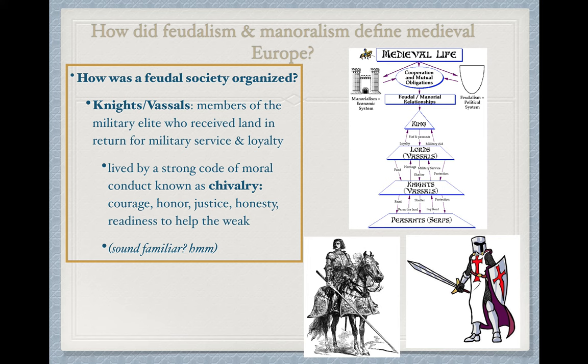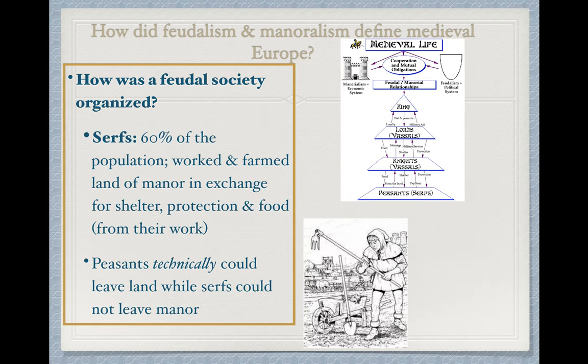Below those lords would be the lesser knights. Knights were vassals to the lord, since they received lands from the lords. They were members of the military elite who received land in return for military service and loyalty. Very interestingly, just like the samurai with the code of Bushido, these knights lived by a strong moral code of conduct known as chivalry — emphasizing courage, honor, justice, and readiness to help the weak. This concept of chivalry dates back to these knights, an interesting parallel to what happened with samurais in Japan.